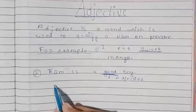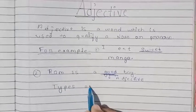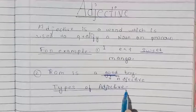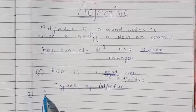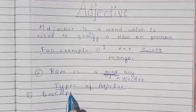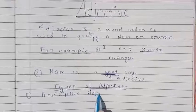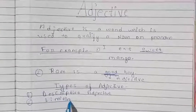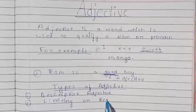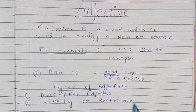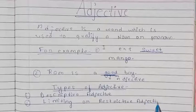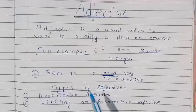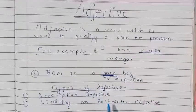So now, next we move to the types of adjective. Mainly, adjective के two types होते हैं। पहला, descriptive adjective, और दूसरा, limiting या restrictive adjective।